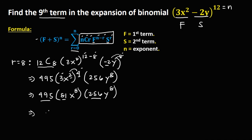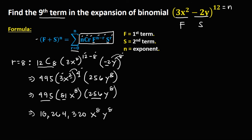So the result is 10,264,320 x to the power 8, y to the power 8. This is the 9th term of the binomial expansion.